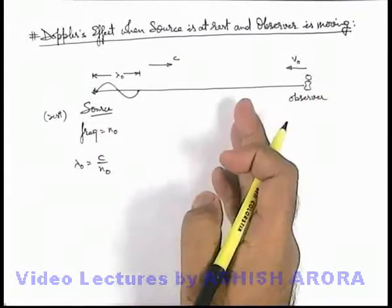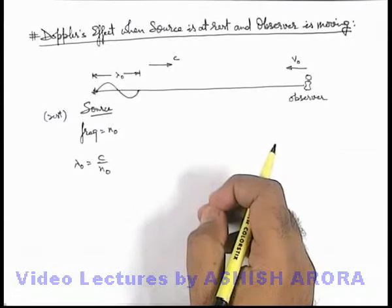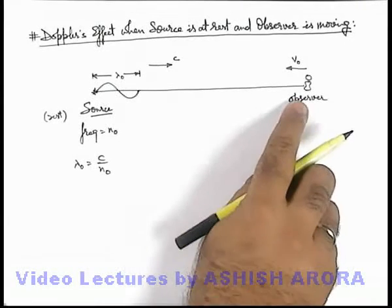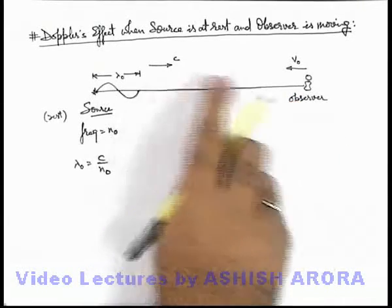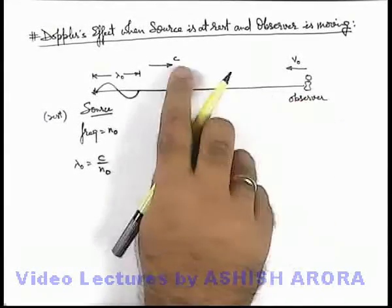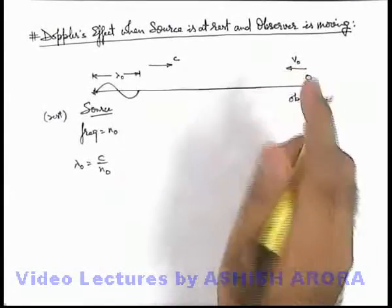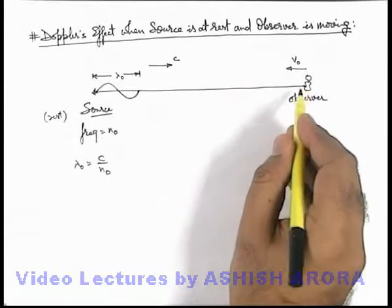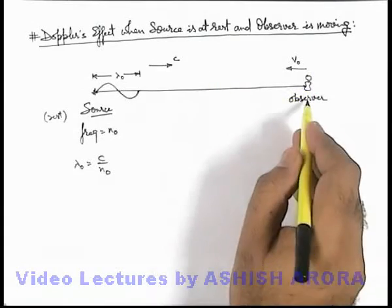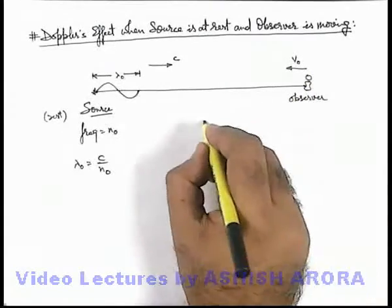Now if the observer is also moving towards the source with a speed v₀, we can say observer will feel that sound is approaching the observer at a speed c plus v₀. So if we talk about the distance covered by the wave with respect to observer in 1 second...